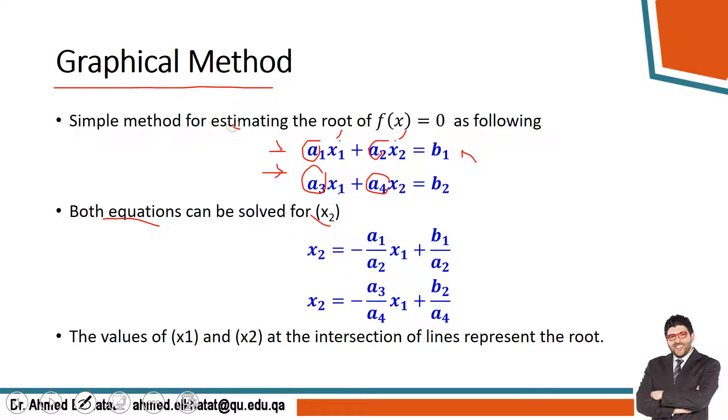So the first one, x2, will be minus a1 over a2 times x1 plus b1 over a2.